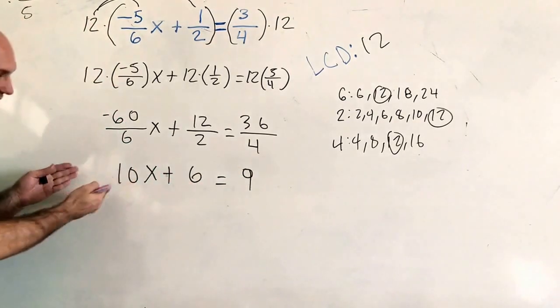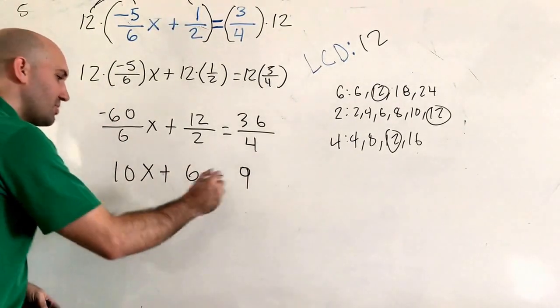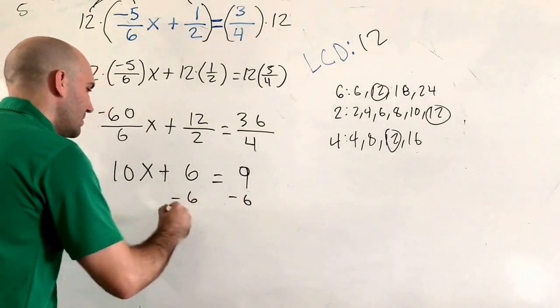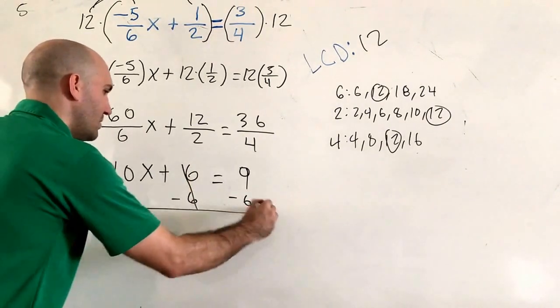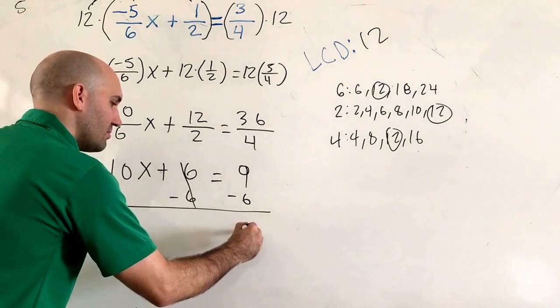And now we look at this problem, and it's a lot easier. So I'm going to subtract 6 from both sides. Cancel that out. 9 minus 6 is going to be 3.